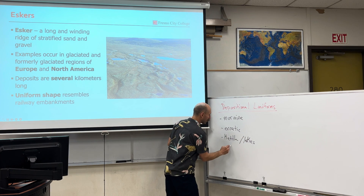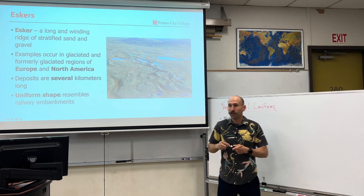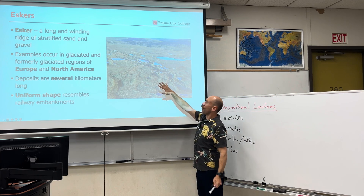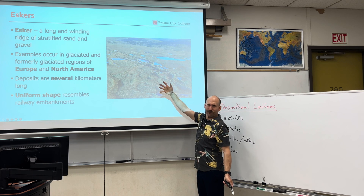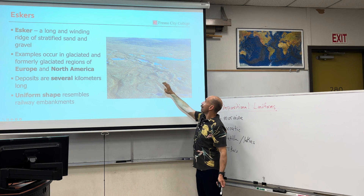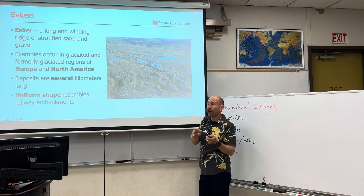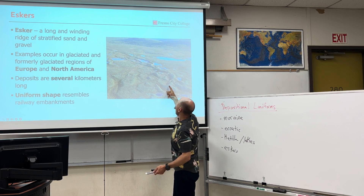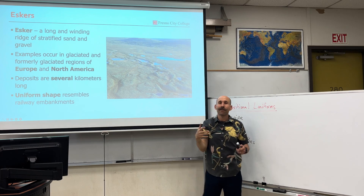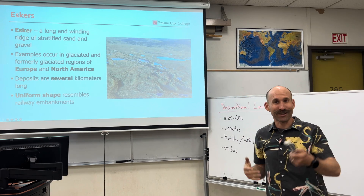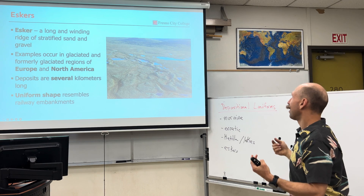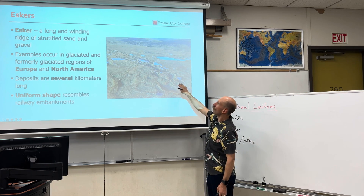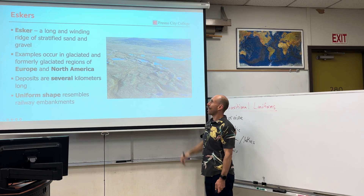Eskers — these are so fun! Imagine this whole plane was covered with ice. Inside the ice little channels started to form as it was melting; those channels were transporting sediments. Then those channels inside of the glacier filled with sediment or glacial till. The rest of the glacier melted, leaving behind these long and winding ridges of stratified sediment and gravel called eskers.